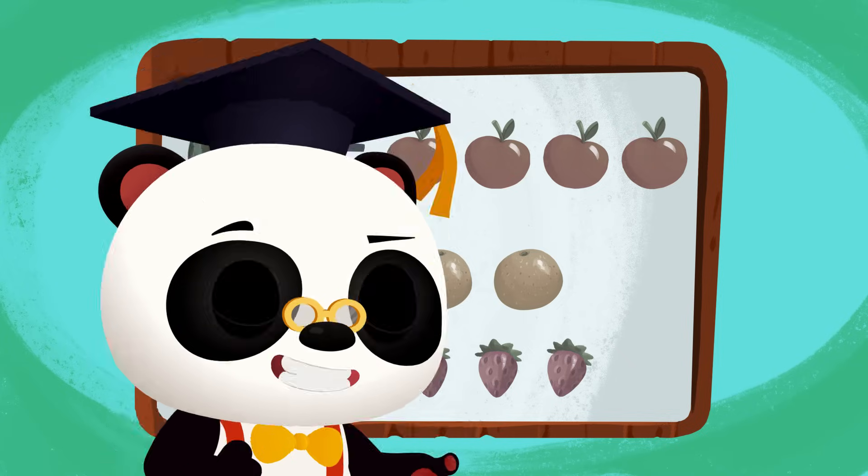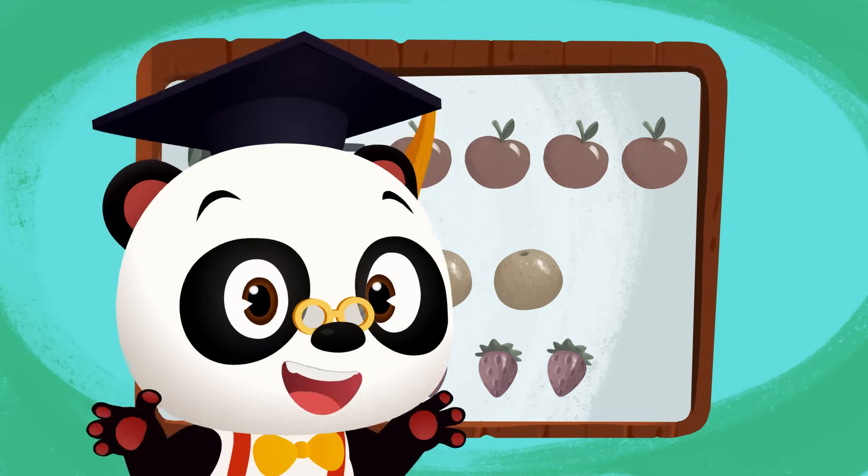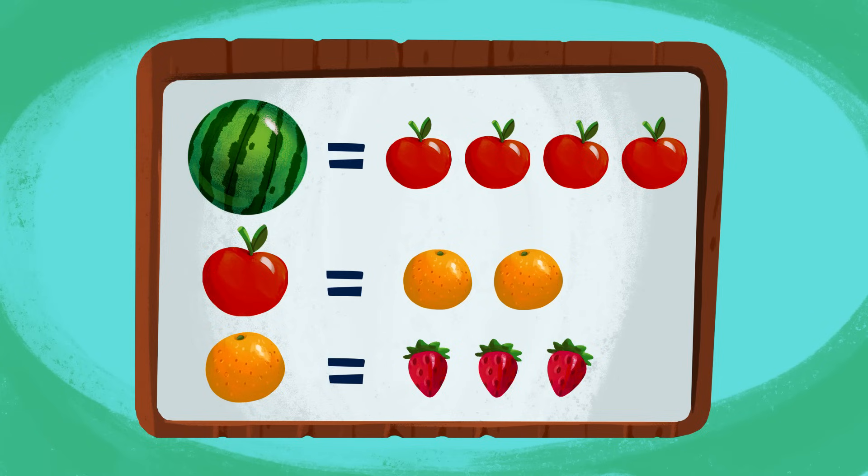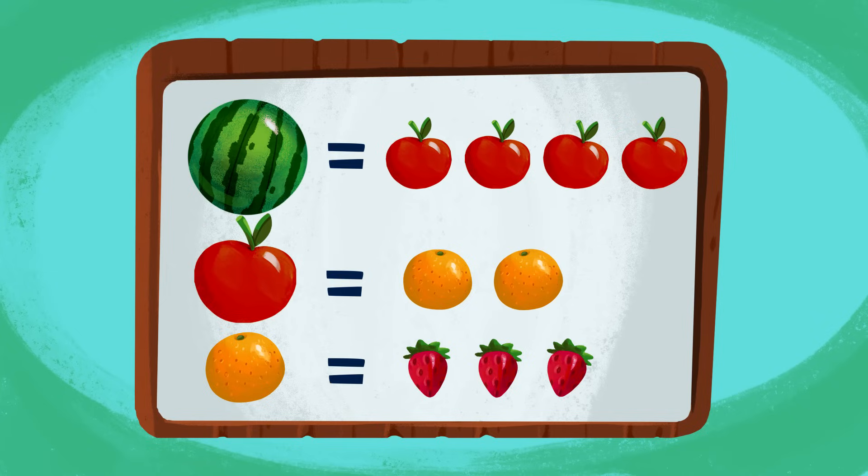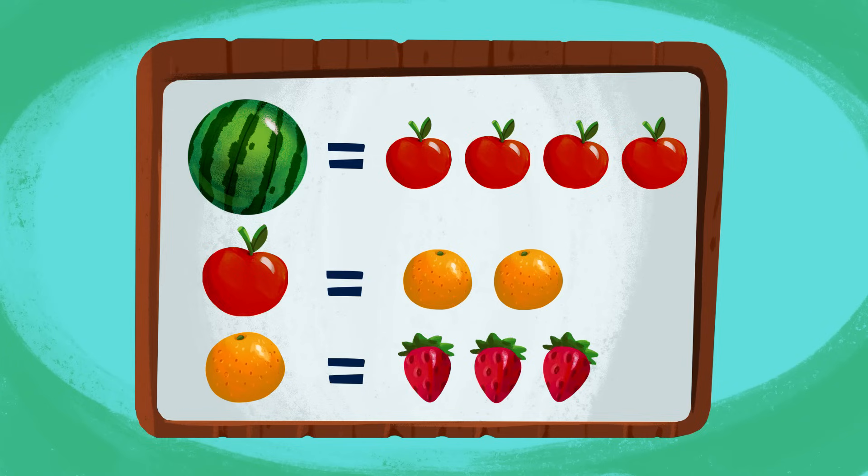Awesome! Let's take a look at Moo's exchange rate! Okay, so one watermelon equals four apples! One apple equals two oranges! And one orange equals three strawberries!